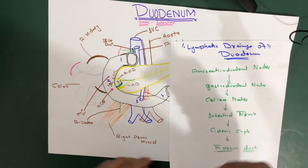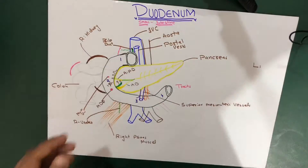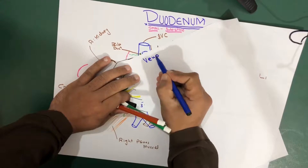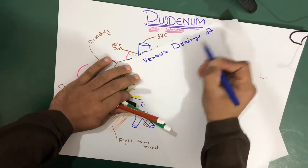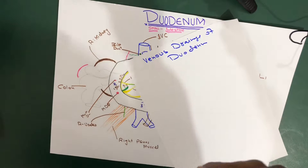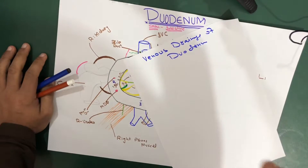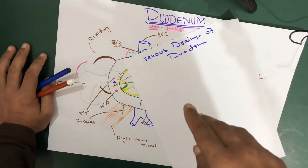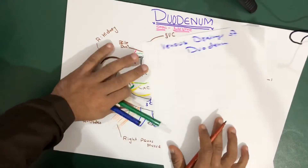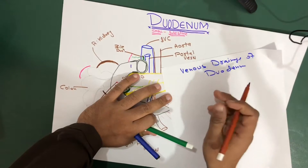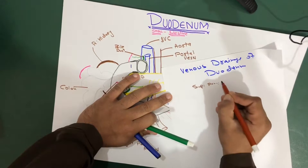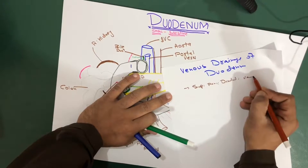Now we're going to talk about the venous drainage and nerve supply. The venous drainage of the duodenum is very simple and similar to the arterial supply. The veins actually drain into the superior pancreaticoduodenal vein, and that ends up in the portal vein. We also have inferior veins which drain into the superior mesenteric vein. Let me draw it to make it easy.